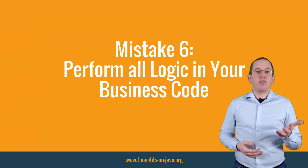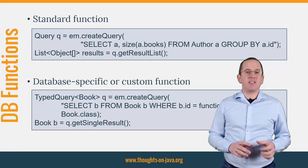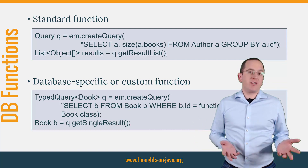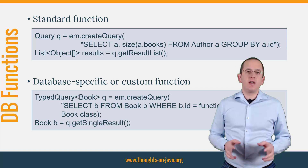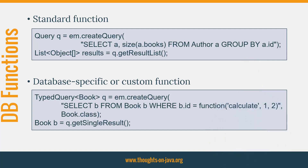Mistake number 6: Perform all logic in your business code. For us Java developers, it feels natural to implement all logic in the business layer — we can use the language, libraries and tools that we know best. But sometimes the database is the better place to implement logic that operates on a lot of data. You can do that by calling a function in your JPQL or SQL query, or with a stored procedure. You can use standard functions in your JPQL queries the same way as in SQL — just reference the name of the function, followed by an opening bracket, an optional list of parameters and a closing bracket.